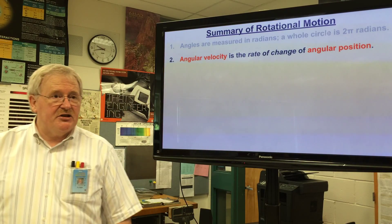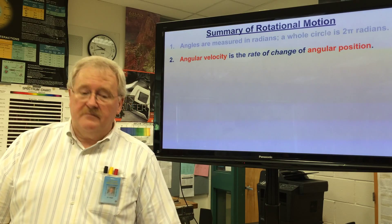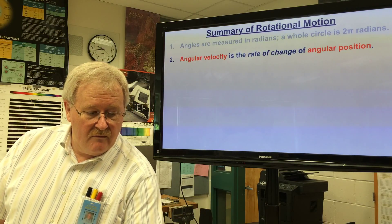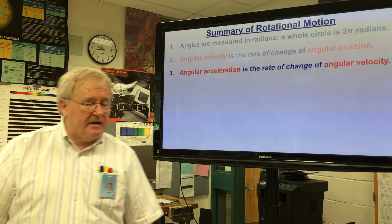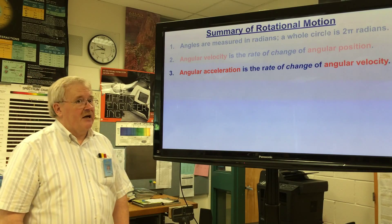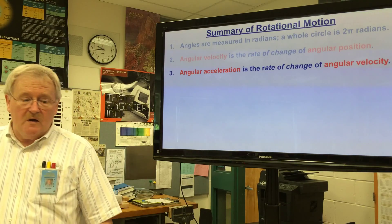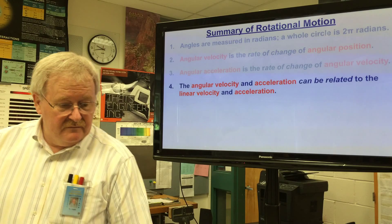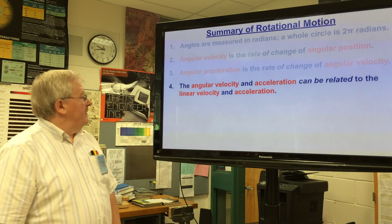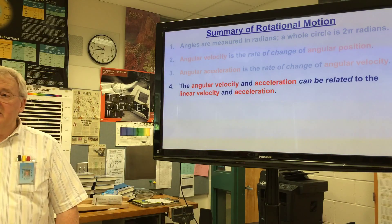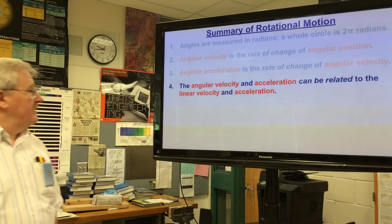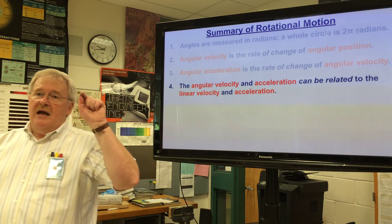Angles are measured in radians. A whole circle is 2π radians. Angular velocity is the rate of change of angular position. Angular acceleration is the rate of change of angular velocity.